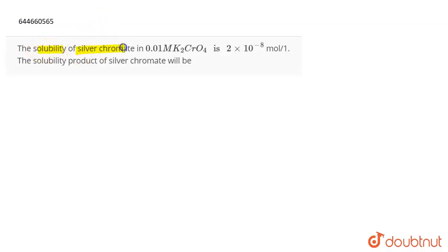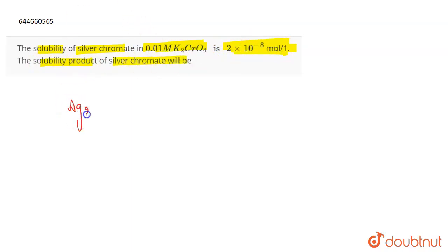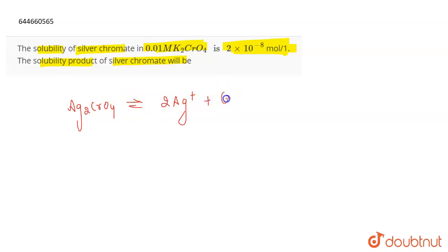The question says that the solubility of silver chromate in 0.01 molar K₂CrO₄ is 2 × 10⁻⁸ mol/L. We need to find the solubility product of silver chromate. Silver chromate, Ag₂CrO₄, dissociates to give 2 Ag⁺ plus CrO₄²⁻.